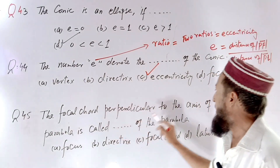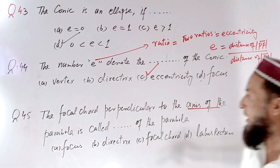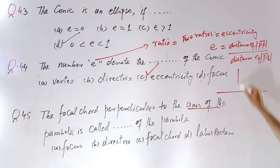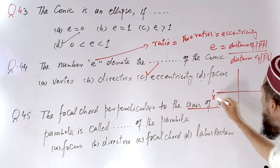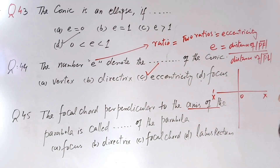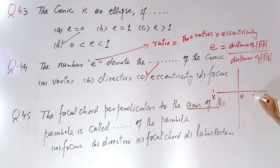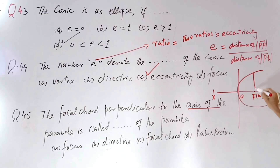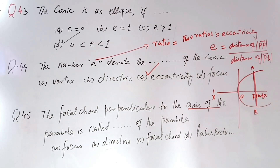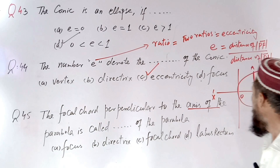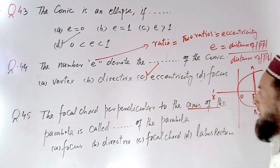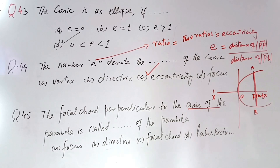The focal chord perpendicular to the axis of the parabola — here the axis of the parabola is the X-axis. A focal chord perpendicular to the axis, where A and B are any two points on the parabola which is perpendicular to the focal chord, is called the latus rectum.